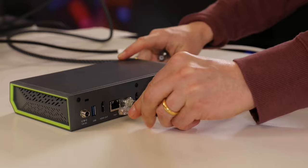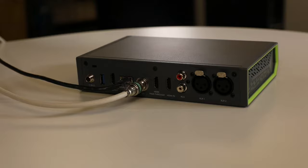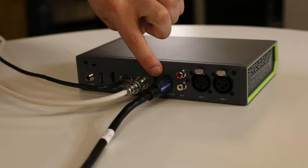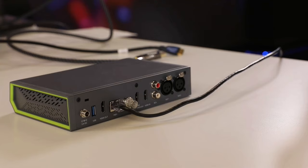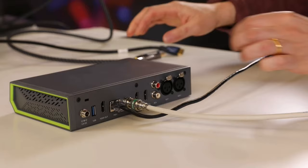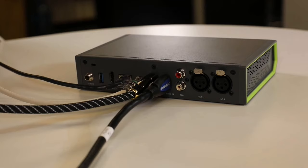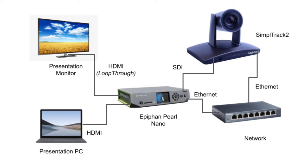Next, we will plug in our video sources to the Epiphan Pearl. Let's start with the HDMI port connected to the presentation laptop. Next, we can connect the SDI port to the Simple Track 2's video output connection. Because we also have an LCD monitor to show our presentation in the room, we can connect the HDMI loop-through port from the Epiphan Pearl Nano into this display.